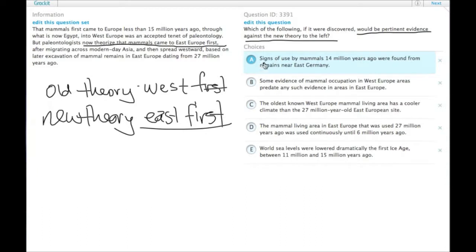A, signs of use by mammals 14 million years ago were found from remains near East Germany. Well, this is more recent than any of the numbers in the original passage, so this isn't it.